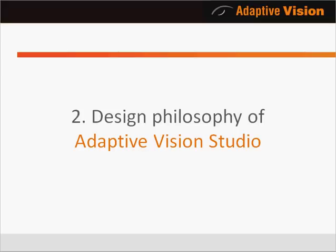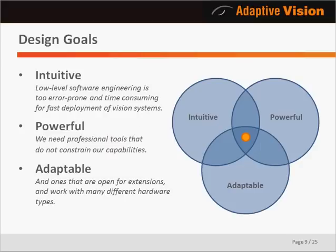In the second part of this presentation I will describe the fundamental assumptions that Adaptive Vision Studio is based on. In the past we developed machine vision applications with C++ programming but soon realized this was too error-prone and time-consuming for fast deployment. On the other hand, most available graphical environments were limited in their capabilities, and many also required committing to hardware from a specific manufacturer only. After careful investigation we developed the only software package that simultaneously allows for efficient development, has capabilities comparable with low-level programming languages, and is fully open for extensions and hardware from many different manufacturers. These design goals are reflected in our product declaration: intuitive, powerful, adaptable.